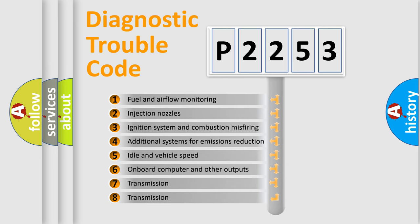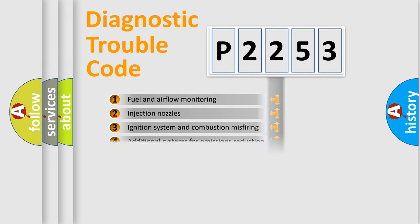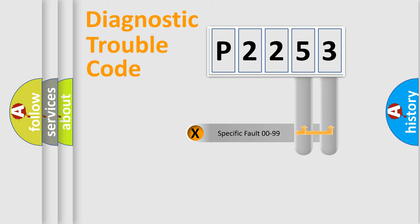The third character specifies a subset of errors. The distribution shown is valid only for the standardized DTC code.